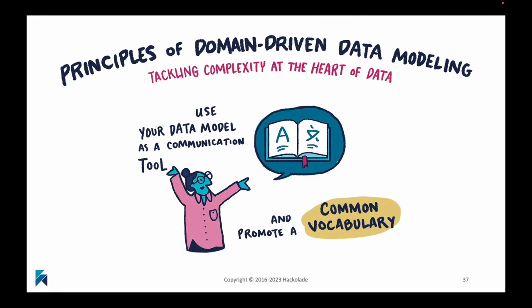The next principle is that when you talk about data modeling, you're talking about applying a communication tool that allows people to understand what the data they are working with actually means and what context they are working in. That's the core function of data modeling, and that means you have to start using a common vocabulary. In your data model, as you use it as a communication tool, you really want to focus on making sure that everyone understands, uses, and promotes this common vocabulary.